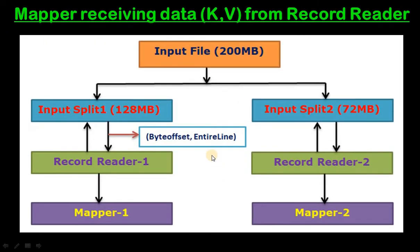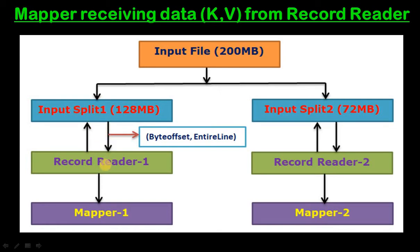As we said, the mapper receives key-value data from the Record Reader. Here is an input file and Hadoop breaks this input file into two input splits. The maximum size of an input split is the size of a block — it is not more than the block size. When we break a 200 MB file, input split 1 has 128 MB and input split 2 has 72 MB. Input split 1 is read by Record Reader 1 and input split 2 is read by Record Reader 2.